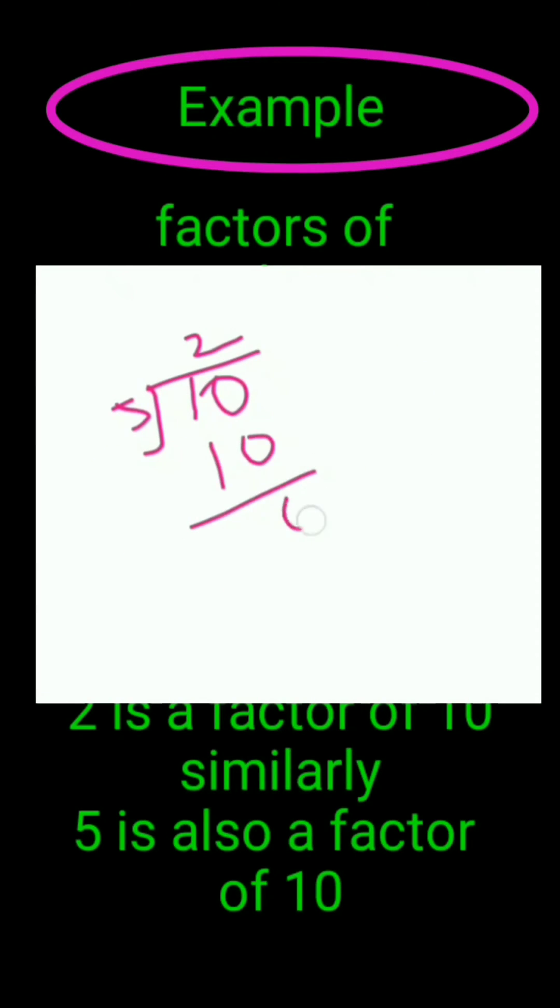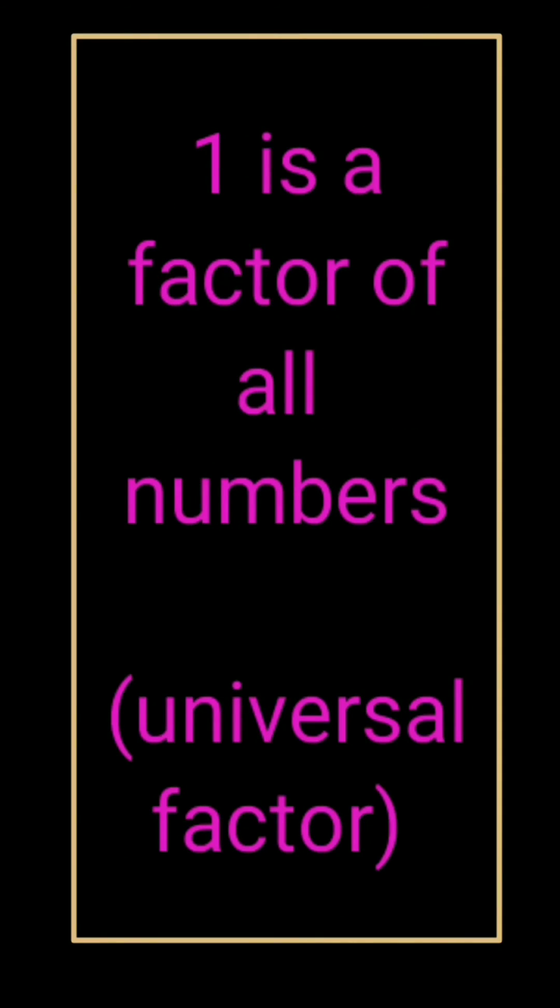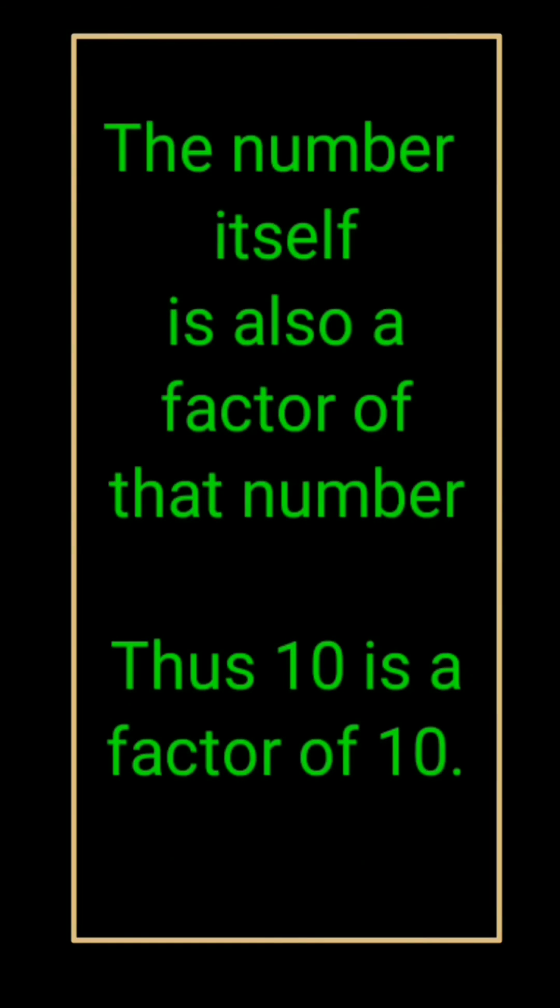Similarly, we can divide 10 exactly by 5 also. Five 2s are 10, therefore 5 is also a factor. Again, 1 can divide all numbers, therefore 1 is a factor of all numbers. We call 1 a universal factor.